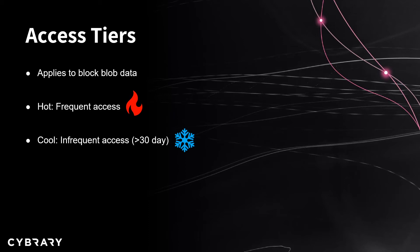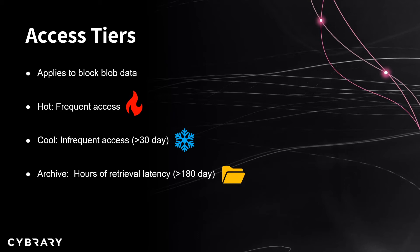Storing data in the cool access tier is going to be more cost effective for the storage, but accessing it is going to be more expensive because it's going to take longer to get access to that data. Finally, we have the archive tier. This tier is only available for block blobs and append blobs. This is going to be for data that can tolerate several hours of latency when being retrieved, and it's recommended that the data inside the archive tier resides there for greater than 180 days — so you're only going to need to access it maybe every six months or so. This is going to be the most cost effective option for storing data long term, but it's going to be more expensive to access the data than what you would find inside the hot or cool tiers.